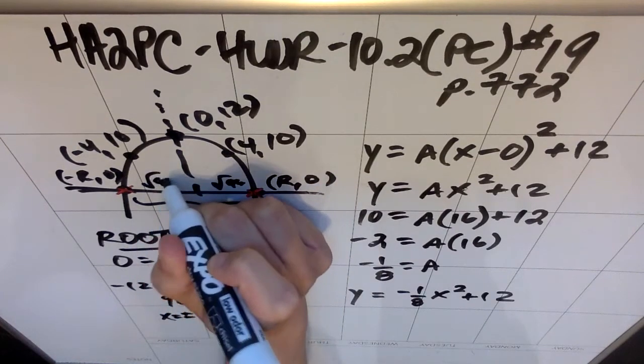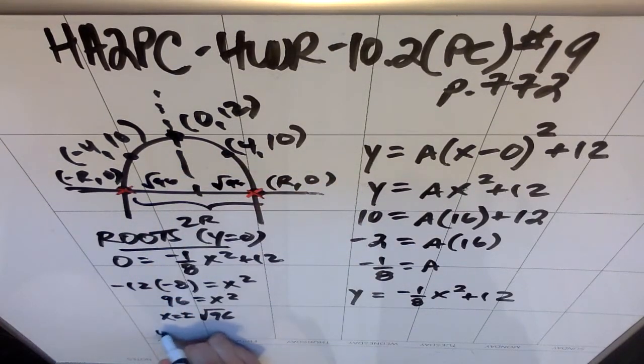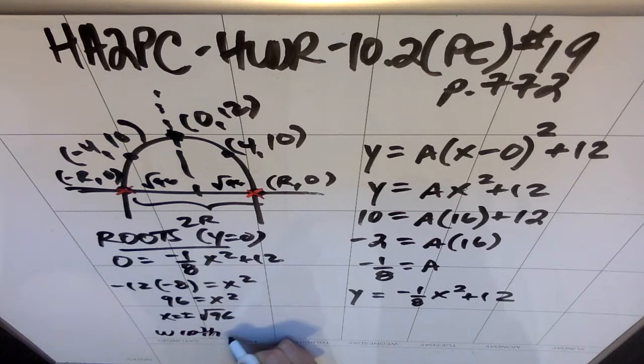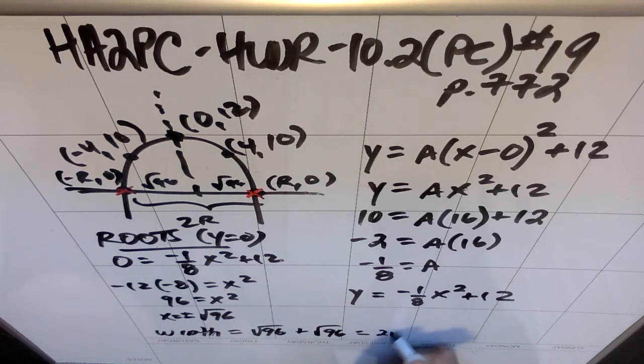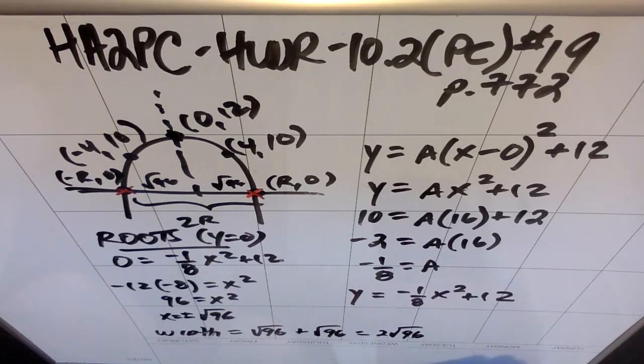But for my purposes, the easiest thing to say is that this side is √96 and this side is also √96. So the width of this arch is √96 plus another √96, which if I'm feeling pretty lazy, I might leave as 2√96. You could definitely simplify this if you want.